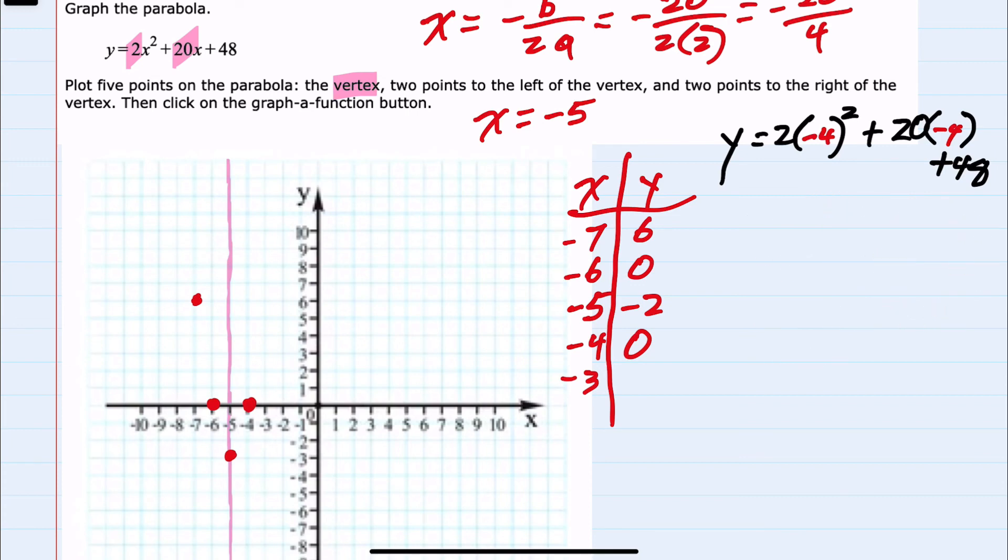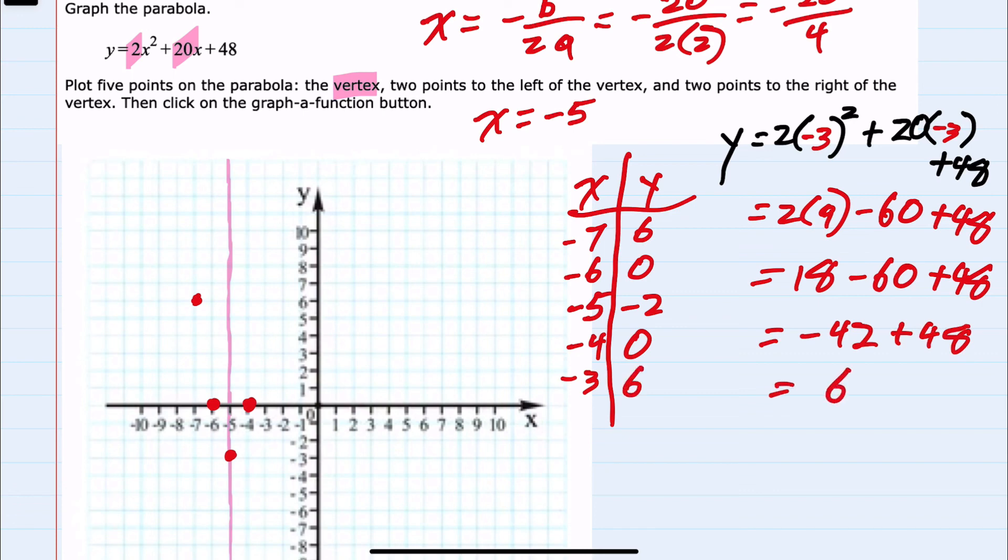Our last point here is when x equals negative 3. That substitution gives us 2 times negative 3 squared, so 2 times 9. 20 times negative 3 is minus 60 plus 48. 2 times 9 is 18 minus 60 plus 48 is negative 42 plus 48, so 6. Our last point is negative 3, 6, which also shows that symmetry.